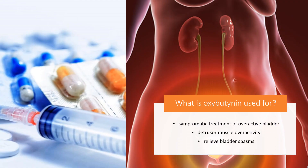What is oxybutynin used for? Oxybutynin is indicated for the symptomatic treatment of overactive bladder, which causes urinary incontinence, frequency, and urgency. Oxybutynin may also be used for children aged 6 and above for the symptomatic management of detrusor muscle overactivity related to a neurological condition. Spina bifida is an example of such a condition in which oxybutynin may be used to control urinary symptoms.